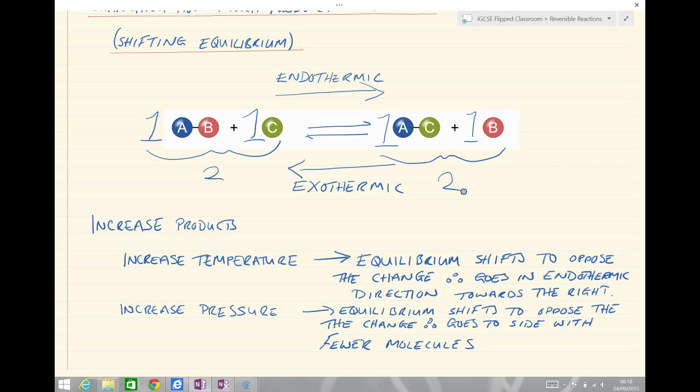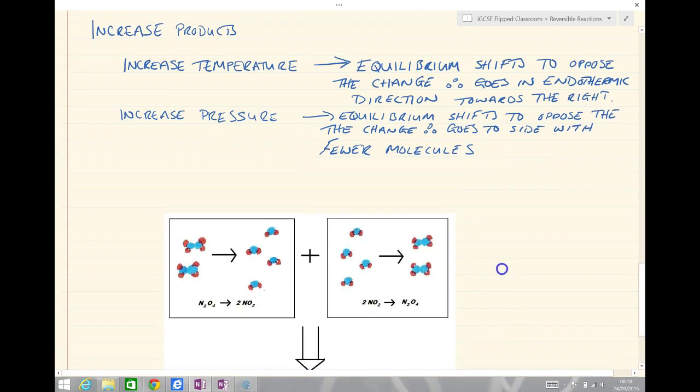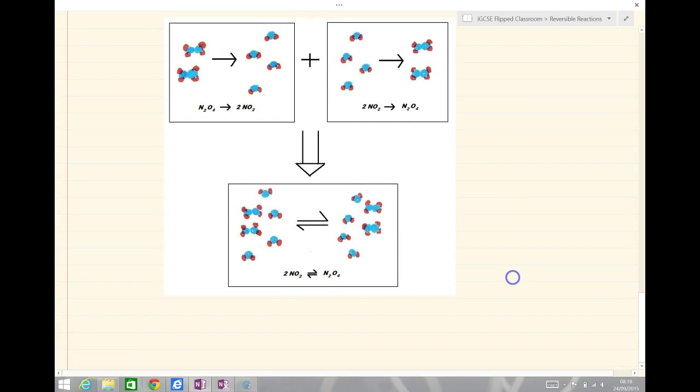However, if we were to have a look at this next example, where we have 2NO2 going to N2O4 and N2O4 going to 2NO2, here's our reversible reaction down the bottom. If we look on the left-hand side, we've got two molecules, whereas on the right-hand side we've actually only got one molecule. What that means is if we were to increase the pressure in this example, the equilibrium would shift to the side with the fewest molecules and therefore would go towards the right-hand side from left to right, increasing the amount of product. Finally, remember we'd say increasing the amount of product would be the same as increasing the yield.